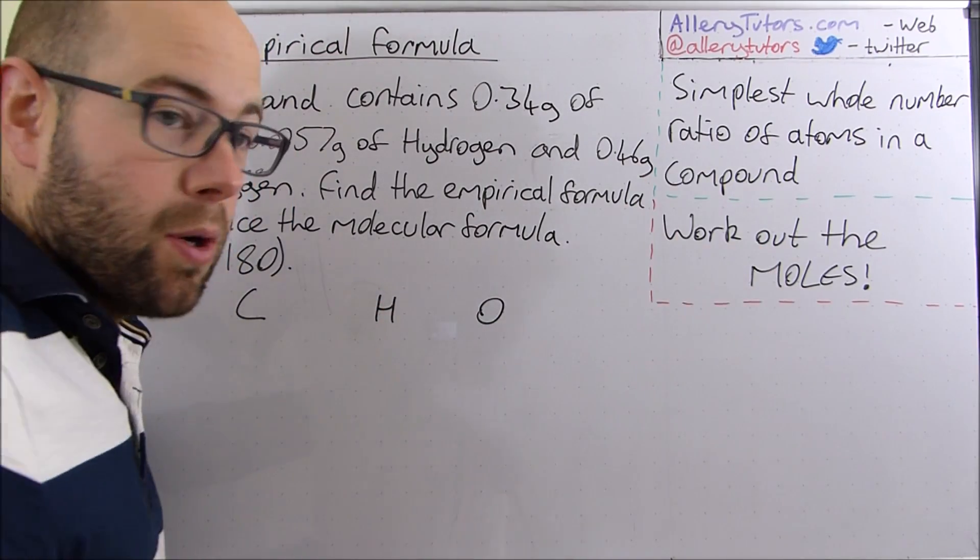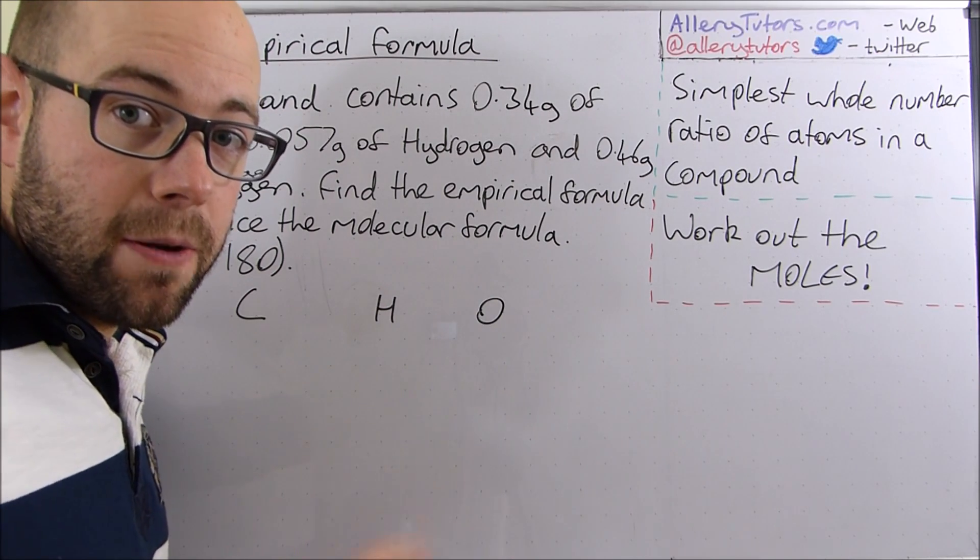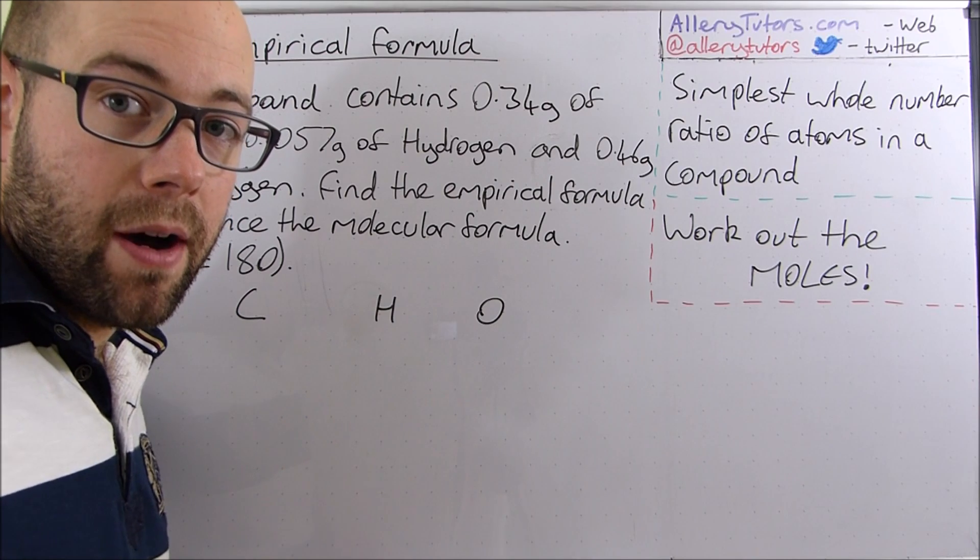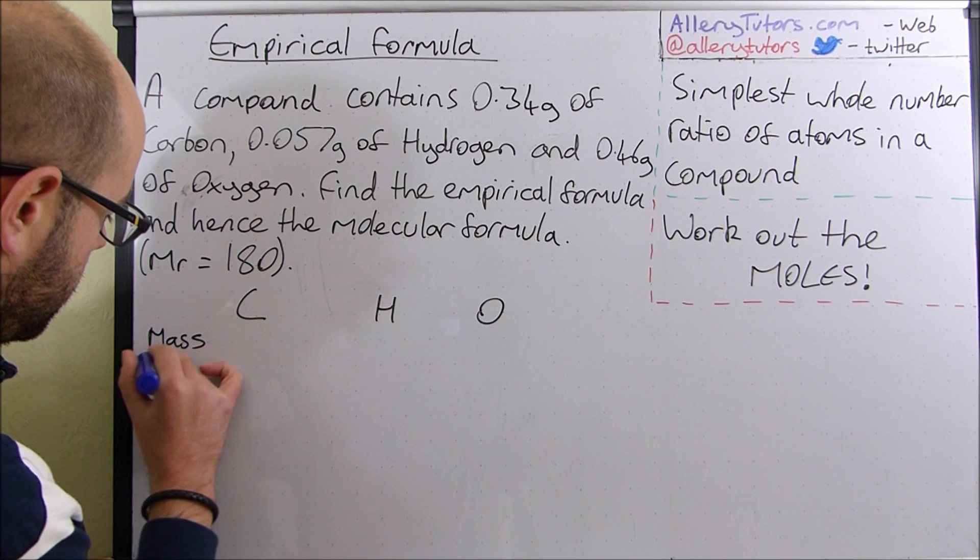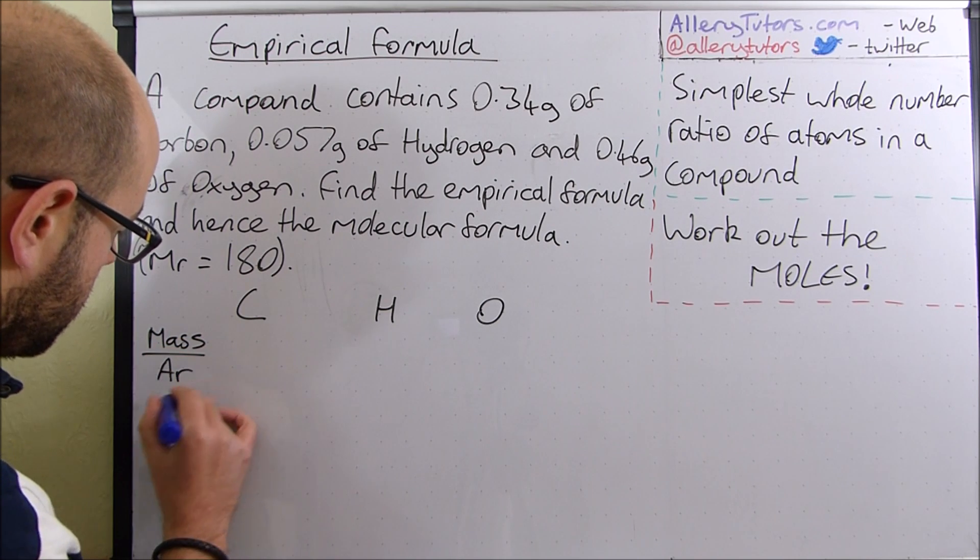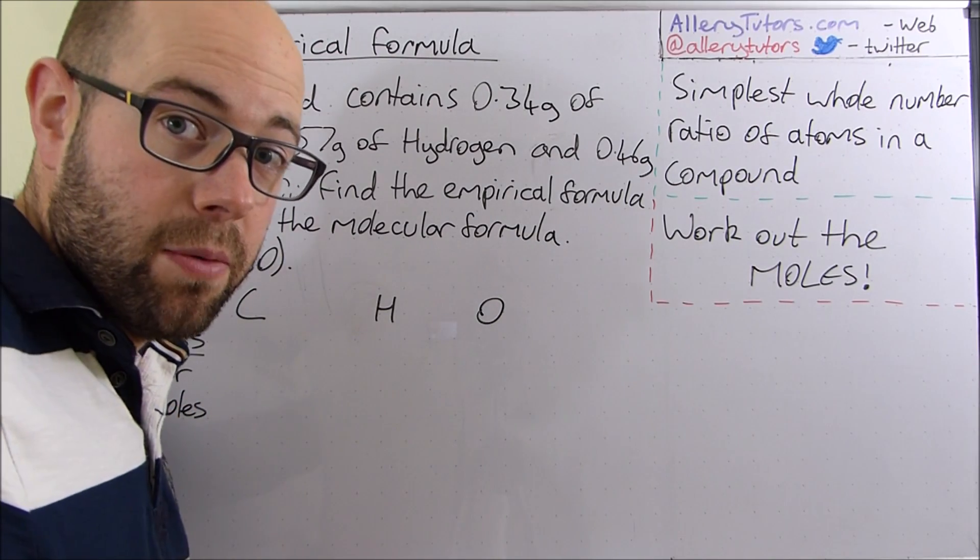Now what we have to do is we have to work out the moles. It's the first thing we do. Now to work out the number of moles of something you do mass divided by MR or AR in this case. So we're going to do mass divided by the relative atomic mass will give you the number of moles and that's exactly what we're going to do here.